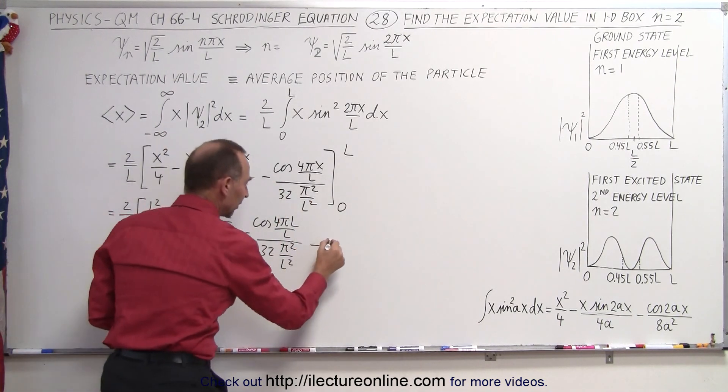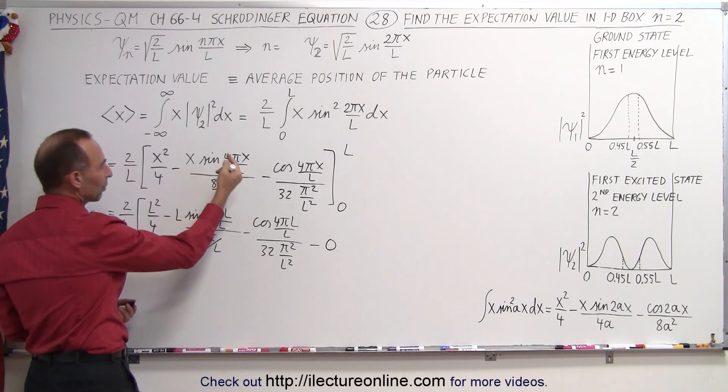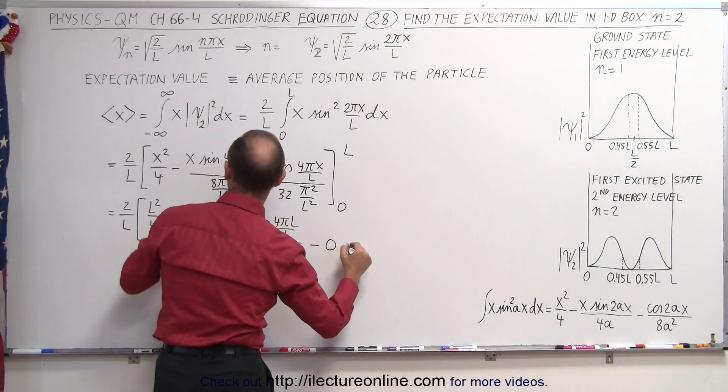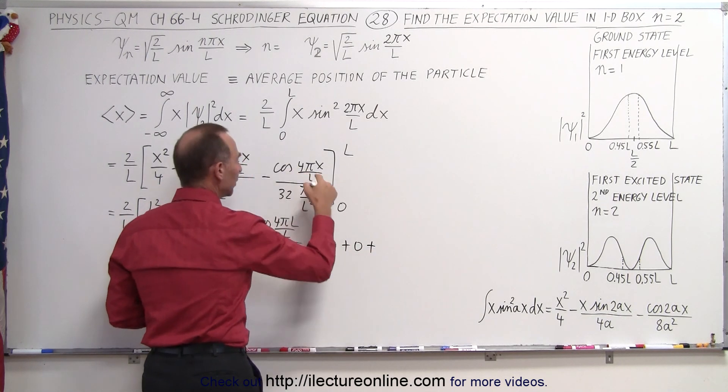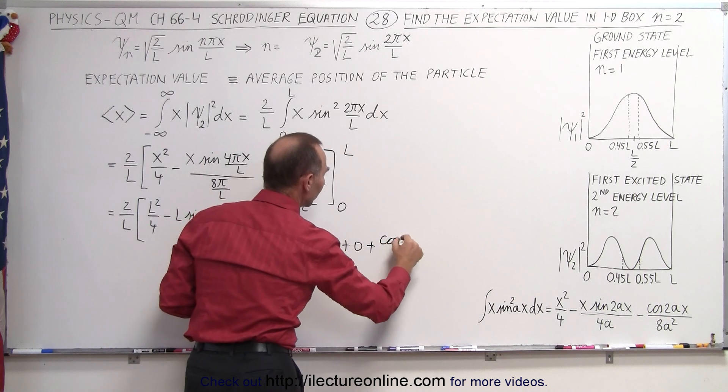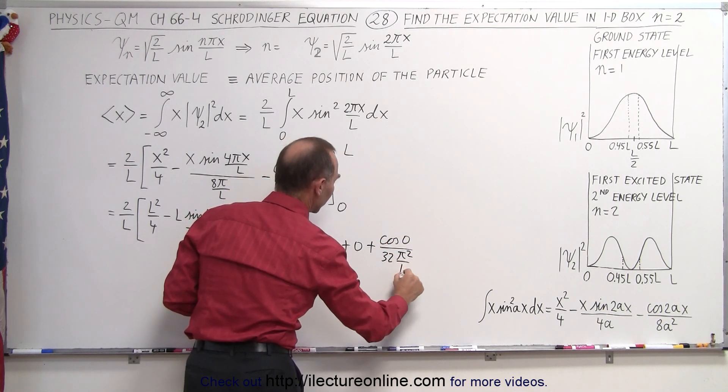Minus—plug in the lower limit, we get 0 for the first term. Plug in the second term, we get 0 times whatever it is, so that's minus times the minus would be plus 0. And the minus times the minus would be plus—that would be the cosine of 0, divided by 32 pi squared over l squared.